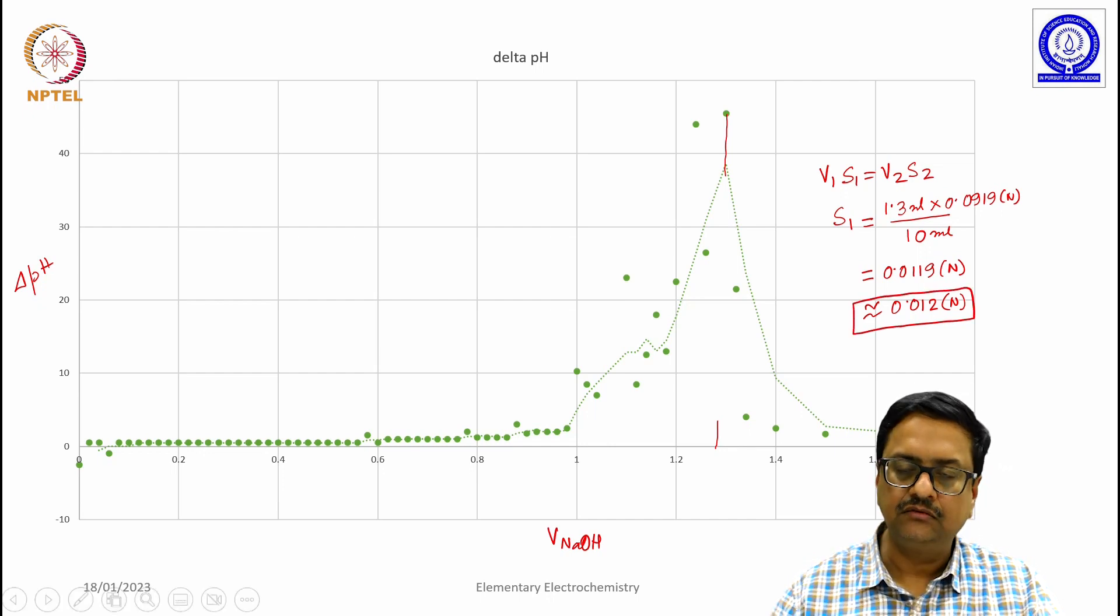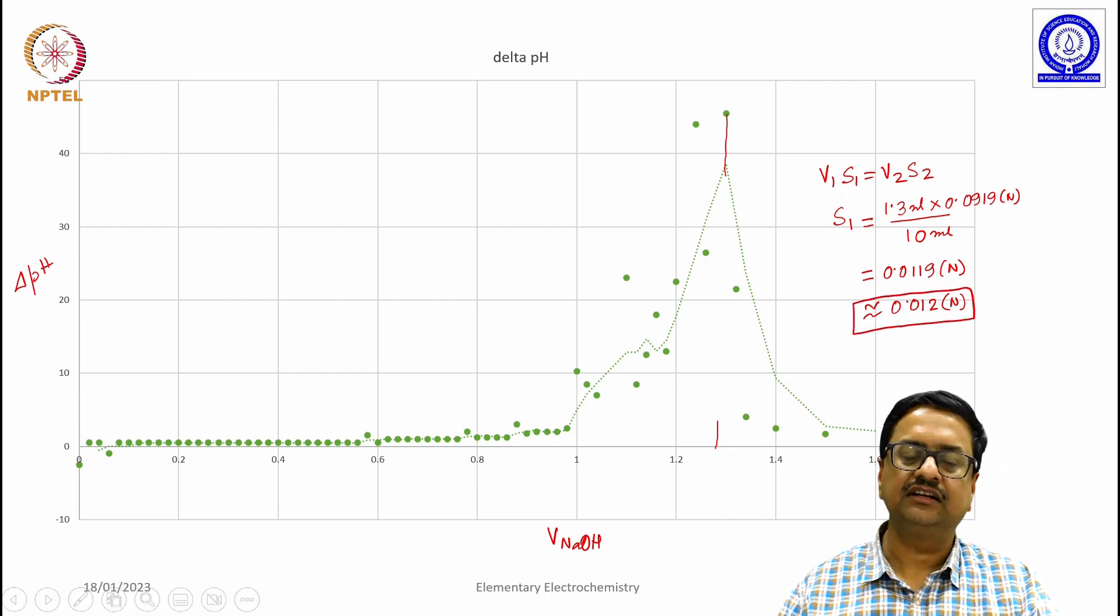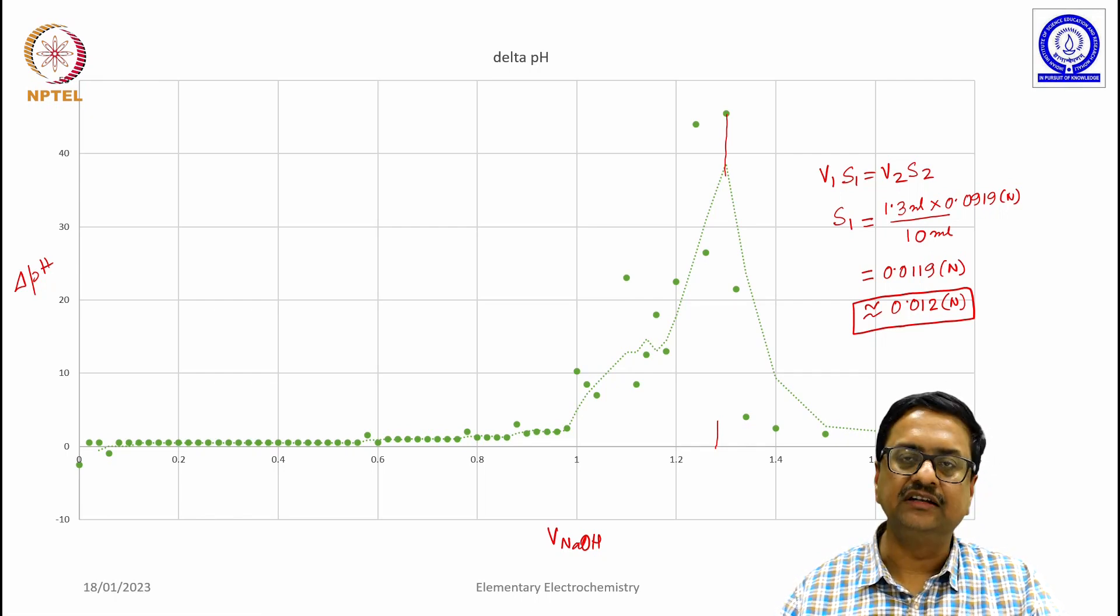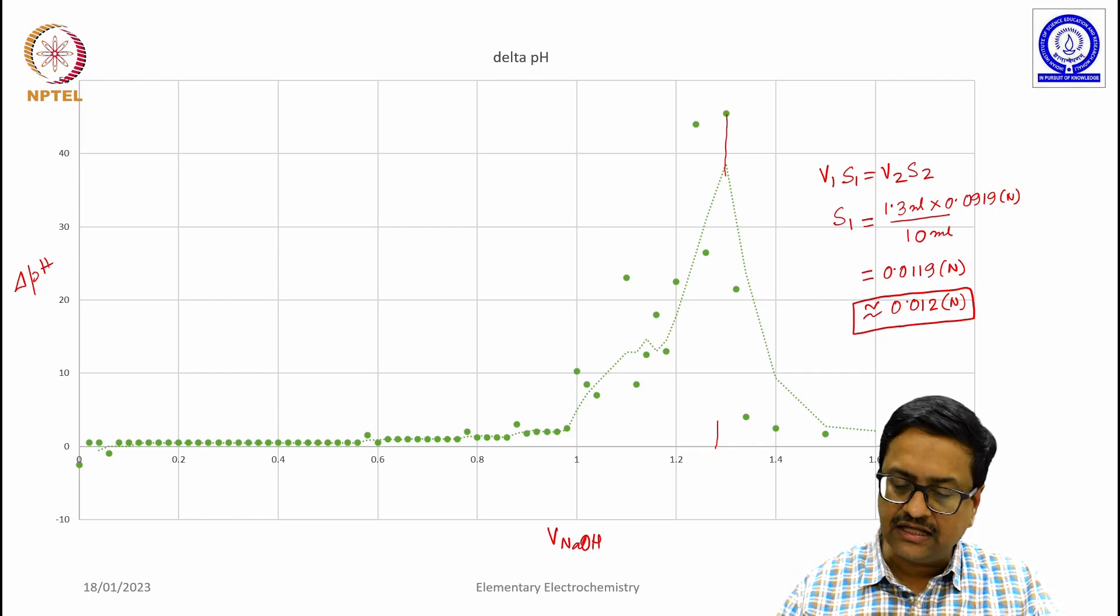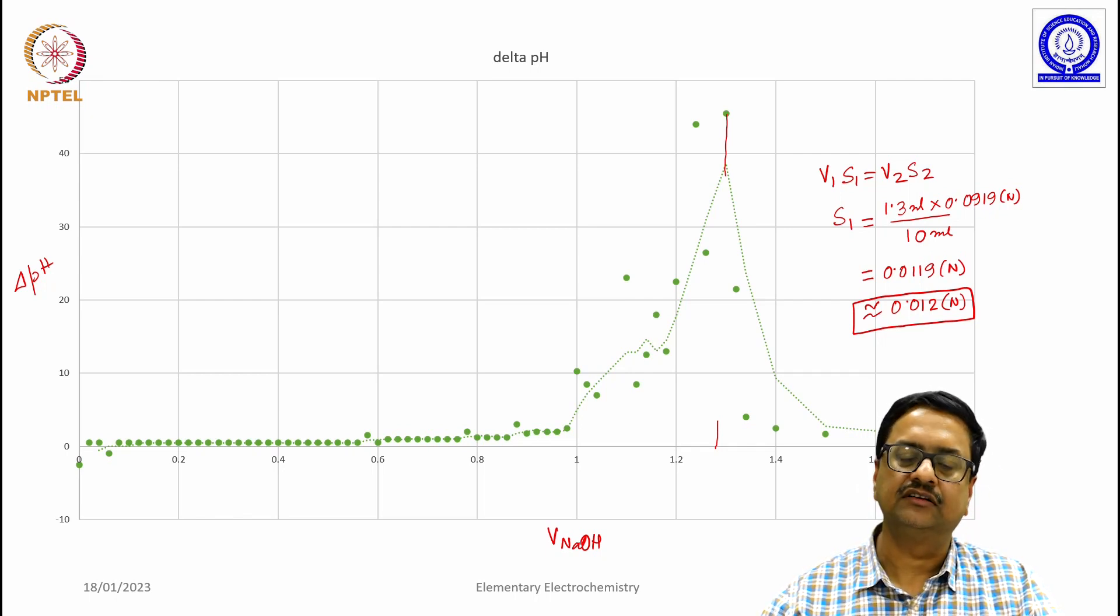So this is how one can determine the concentration of HCl using a potentiometric titration, which experimentally we have demonstrated. And here I am showing you the calculation of that experiment.